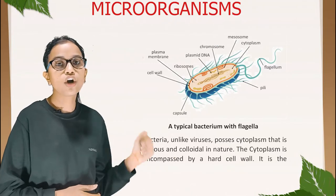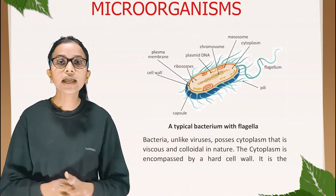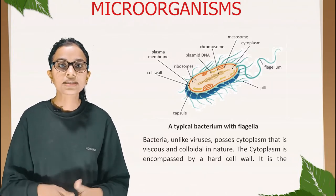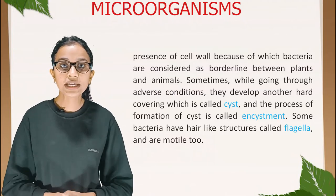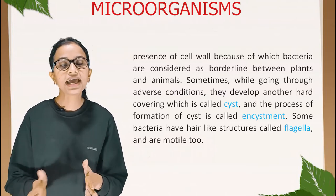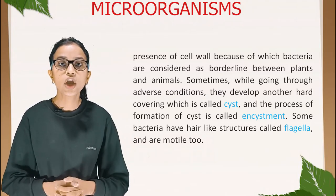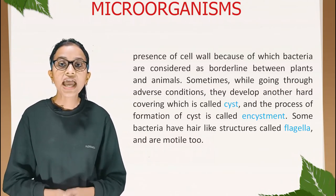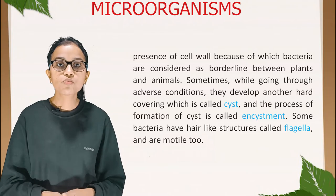This is the picture of a typical bacterium with flagella. Bacteria, unlike viruses, possess cytoplasm that is viscous and colloidal in nature, encompassed by a hard cell wall. It is the presence of a cell wall that makes bacteria a borderline between plants and animals. Sometimes under adverse conditions they develop another hard covering called a cyst, and the process of cyst formation is called encystment. Some bacteria have hair-like structures called flagella and are motile.